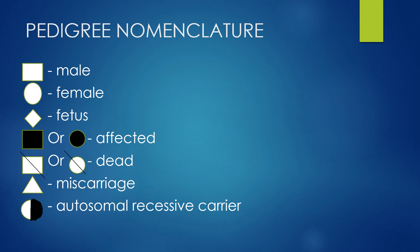A triangle represents a miscarriage or death before the 20th week of gestation. A circle that is colored half black and half white usually represents an autosomal recessive carrier. Not every pedigree shows autosomal recessive carriers like this — in other pedigrees you would see a carrier as just a normal white square or circle. So just pay attention.